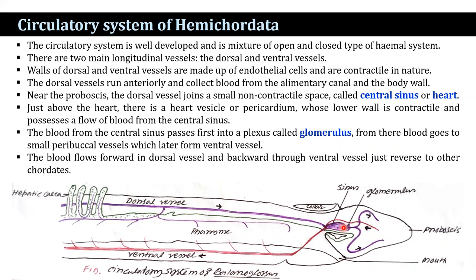Blood from the central sinus passes first into a plexus known as the glomerulus, and from there blood goes to small peribuccal vessels which later form the ventral vessel — just the reverse of other chordates.